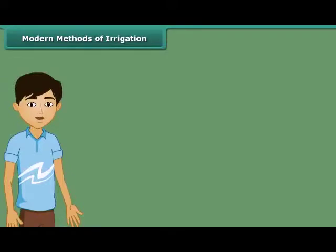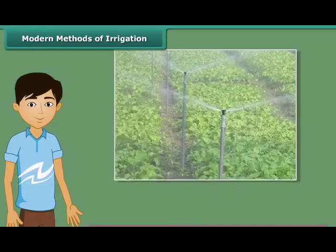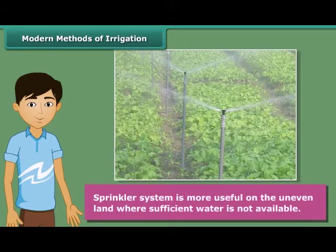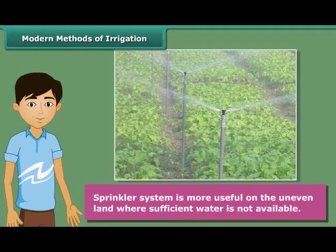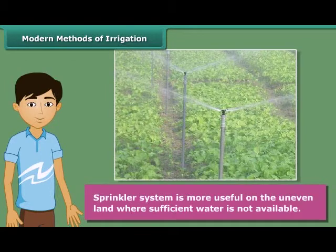Let us now know modern methods of irrigation. A sprinkler system is most useful on uneven land where sufficient water is not available. In this system, perpendicular pipes having rotating nozzles on top are joined to the main pipeline at regular intervals. When water is allowed to flow through the main pipe under pressure with the help of a pump, it escapes from the rotating nozzles and gets sprinkled on the crop as if it is raining.